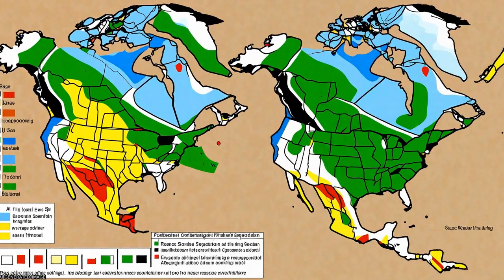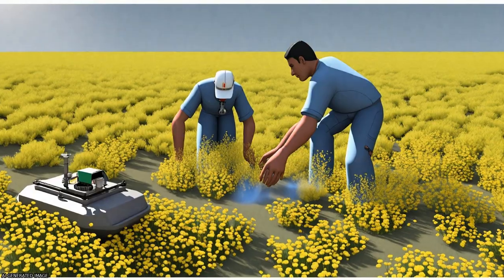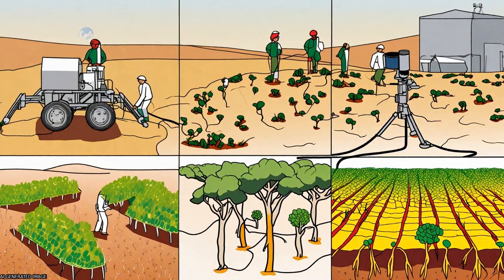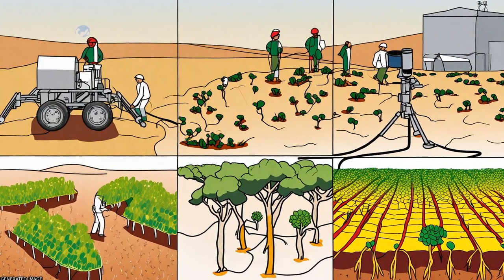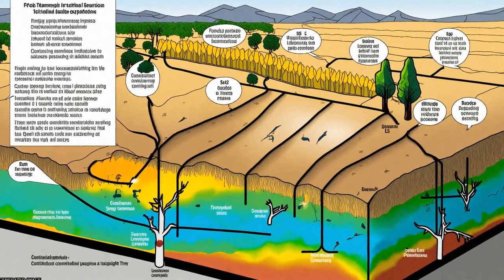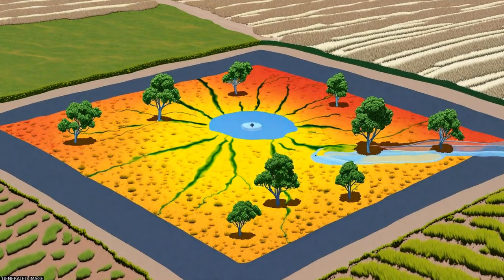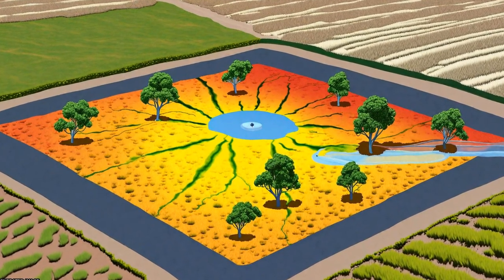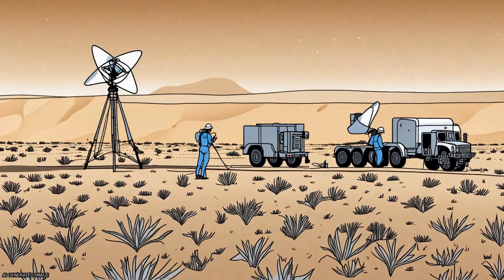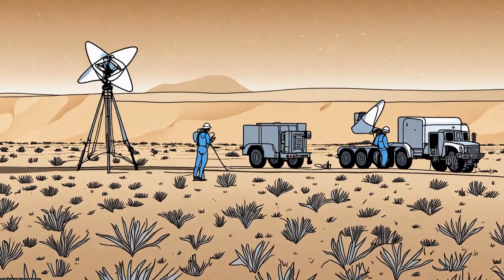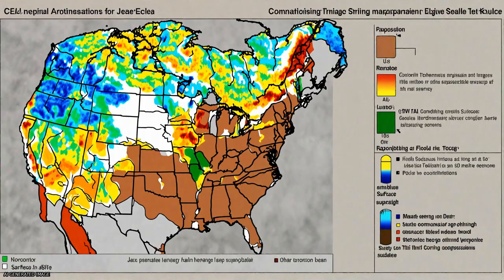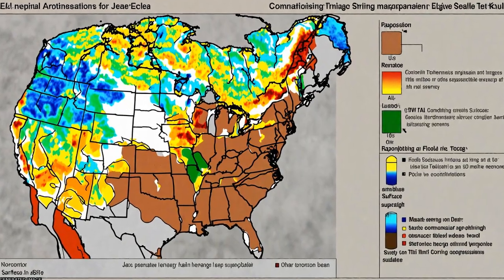The Atmosphere-Land Exchange Inverse (ALEXI) model is a multi-sensor TIR approach to ET mapping, coupling a two-source land surface model with an atmospheric boundary layer model in time-differencing mode to map daily fluxes at continental scales and 5-10 km resolution using thermal band imagery and insolation estimates from geostationary satellites.